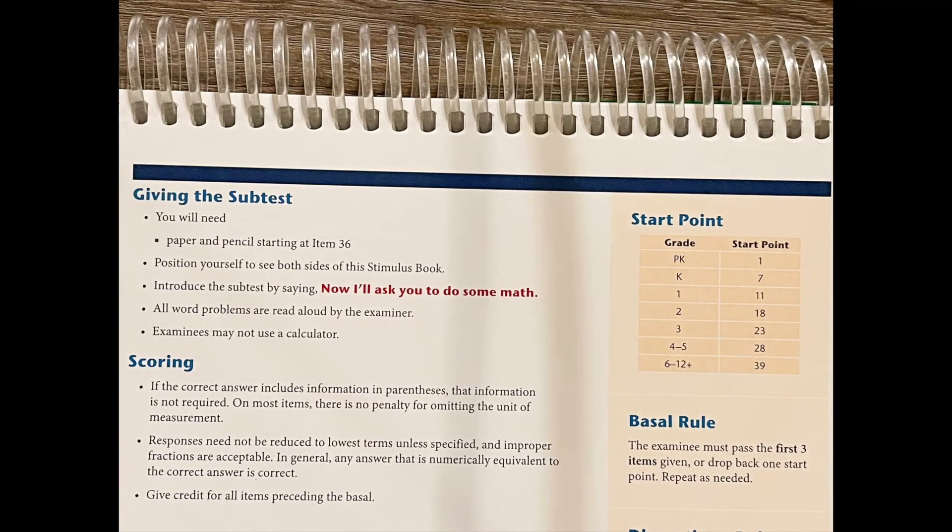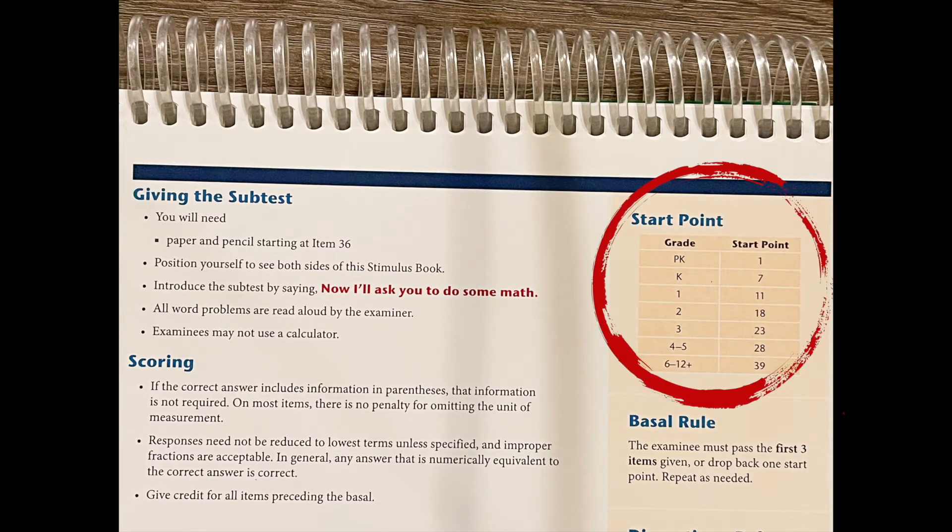To determine a student's starting point, you must first locate their grade level under the start point chart. This chart can be found at the beginning of each subtest.